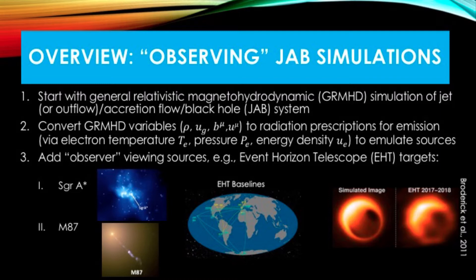Black hole systems — which I've decided to coin JAB systems — and the methodology starts with a general relativistic magneto-hydrodynamic simulation of GRMHD flow variables such as the rest mass density rho, the total gas energy density UG.